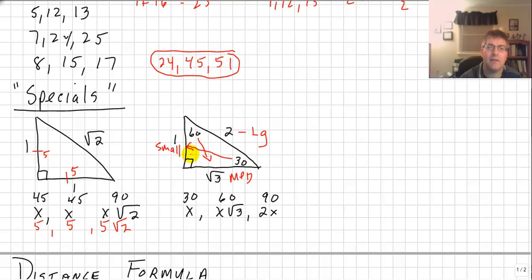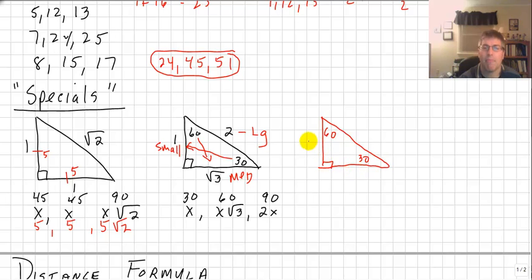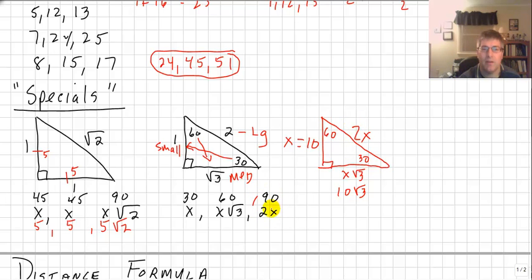The neat thing about a 30-60-90: if the side opposite the 30 is 10, that's our x side. The side opposite the 60 is x radical 3, so if x is 10, that must be 10 radical 3. And if the hypotenuse is 2x — the side opposite the 90 — and x is 10, that side must be 20.